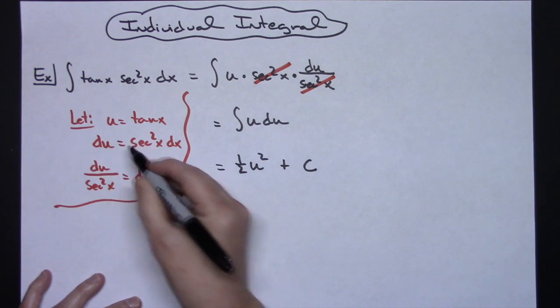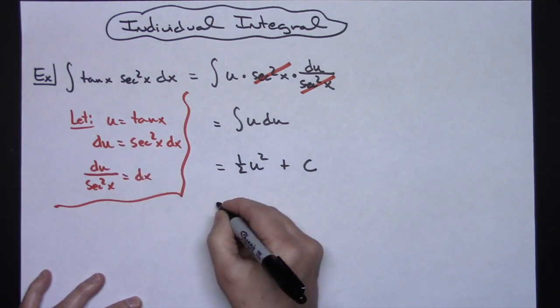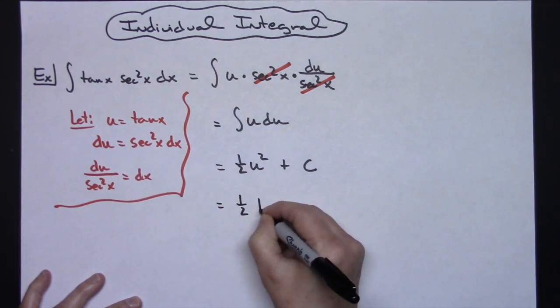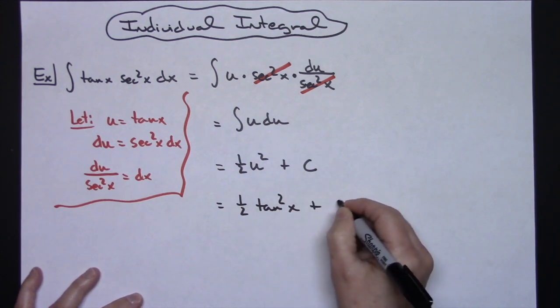Last step would then be to replace that u with what it equals. So I'm going to have a one half tangent squared x plus c.